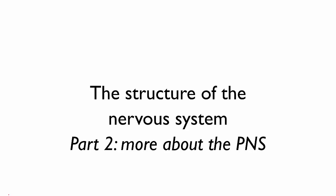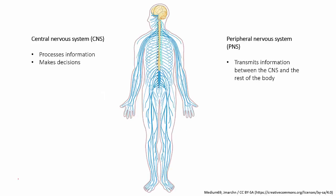Remember that the body's nervous system has two main parts: the central nervous system, or CNS, which processes information and makes decisions, and the peripheral nervous system, or PNS, which connects the CNS to the rest of the body and transmits information between the body and the CNS.